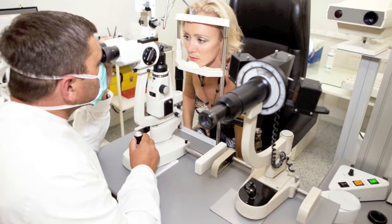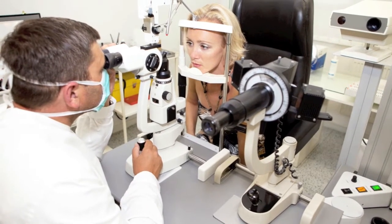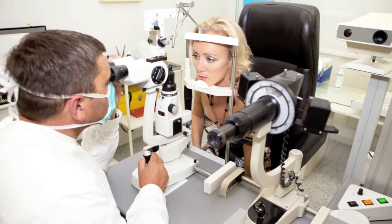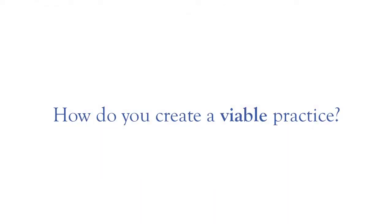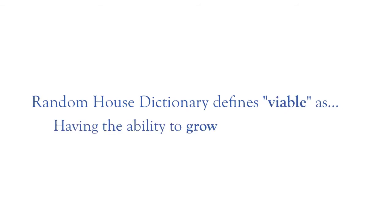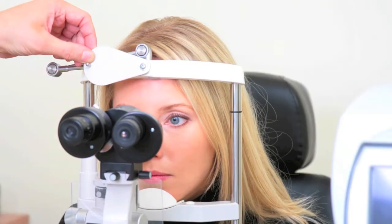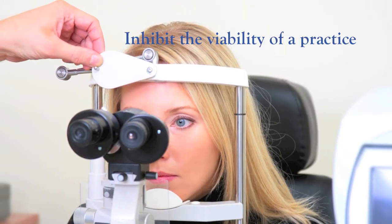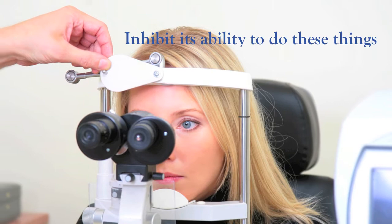As a practicing optometrist, you made the decision at some point in your career to venture into private practice ownership. But how do you make your investment of time, money, and effort profitable enough to provide for your personal and professional goals? How do you create a viable practice? The Random House Dictionary defines viable as having the ability to grow, expand, and develop.